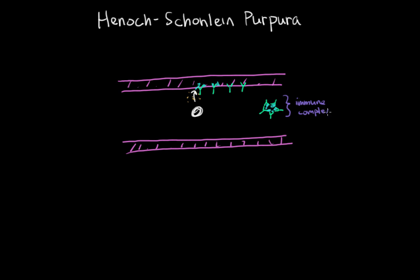In other small vessel vasculitides, these antibodies may be ANCA — anti-neutrophilic cytoplasmic antibodies. But in Henoch-Schönlein purpura, ANCA is not found. Instead, what we see are elevated levels of IgA.